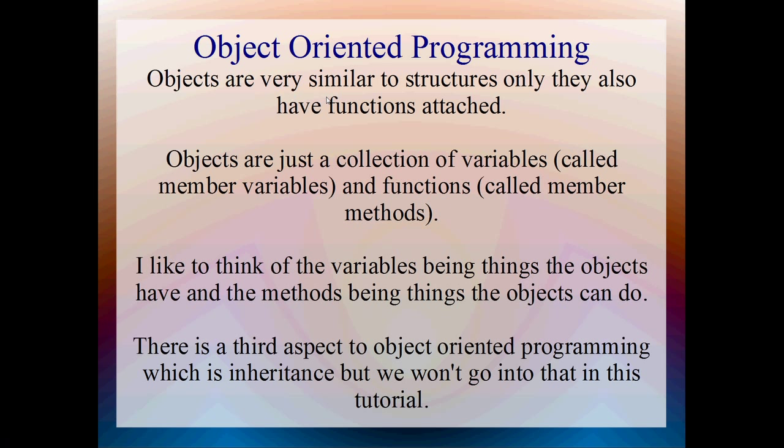So objects are really similar to structures only they also have functions attached to them. And they're basically just a collection of variables called member variables and functions called member methods. Structures can have methods as well, but we're not really going to talk about that. I like to think of variables as being things that the objects own or have, and I like to think of the methods as being things that the objects can do. And there is a third aspect to object-oriented programming which we're not going to go into, and that's inheritance. Or we won't go into it in this tutorial, anyway.